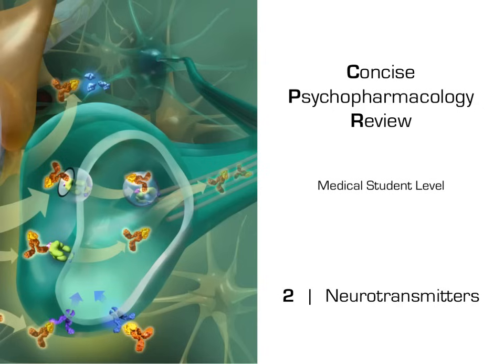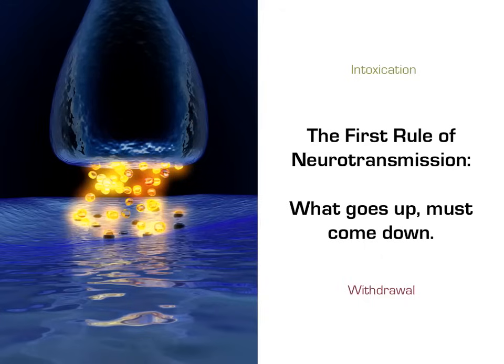Let's begin our discussion of neurotransmitters. First, we'll cover some basic principles behind neurotransmitters, then we'll discuss each of the major neurotransmitters one by one. In order to simplify the principles of neurotransmitters in psychopharmacology, I've come up with what I call the three rules of neurotransmission. These help us to tie together a lot of what you'll be learning.